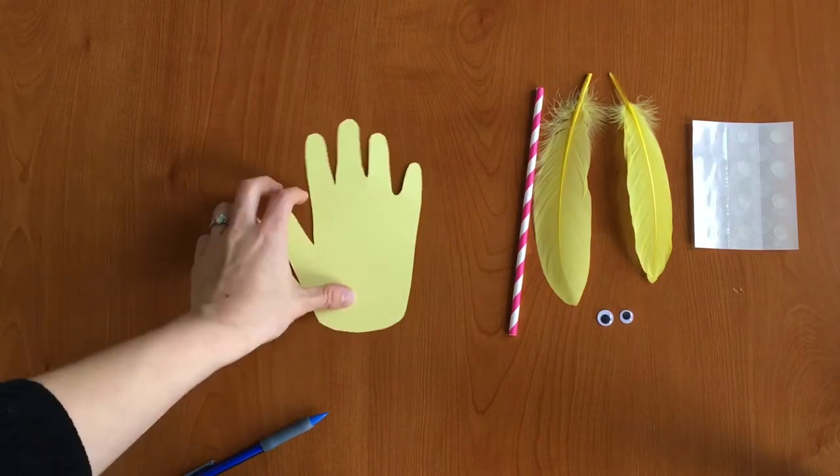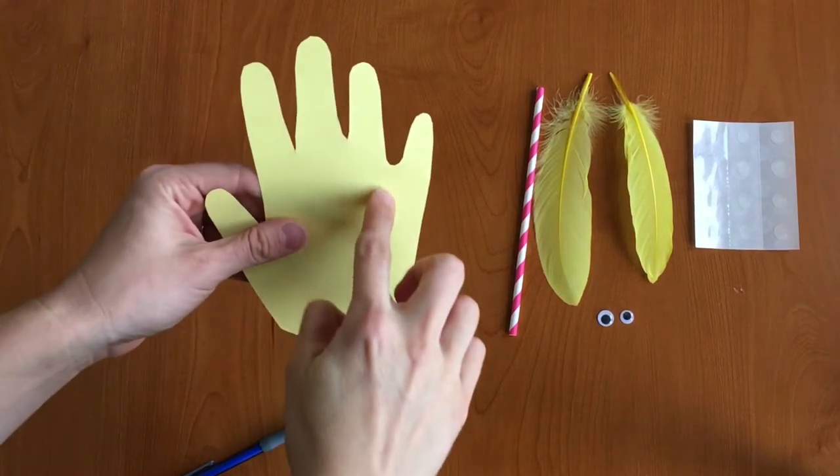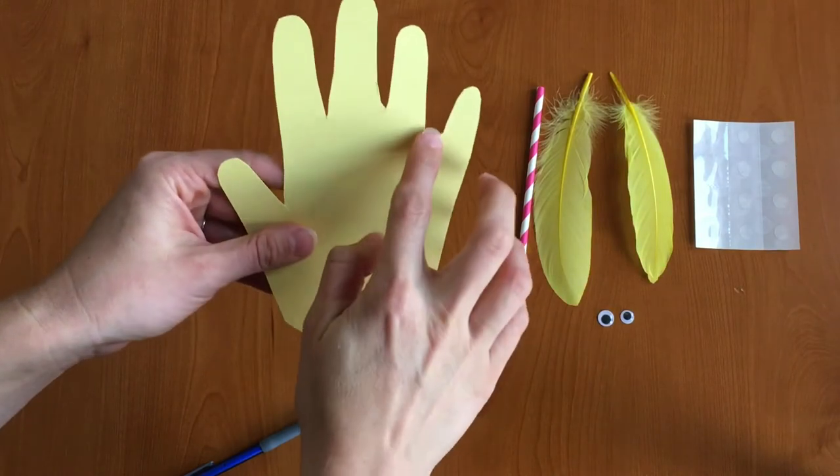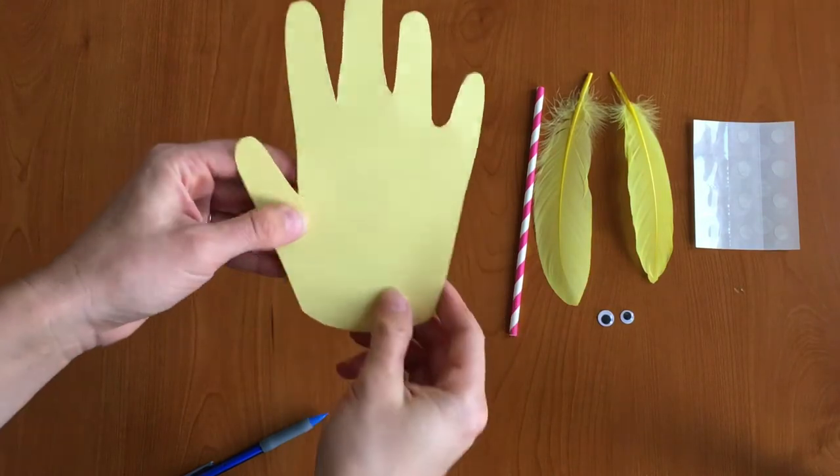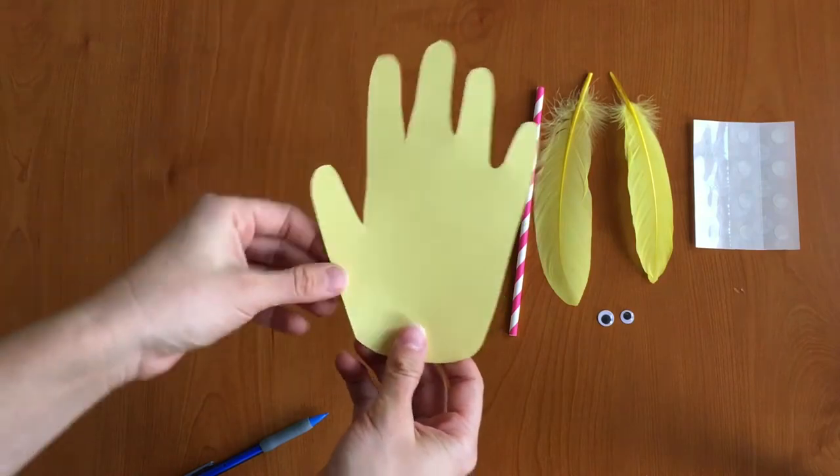Alright so now I have my handprint and as you can see I didn't cut all the way down in between my fingers. I just cut a little bit down so it kind of looks like a head with some hair sticking out of it.